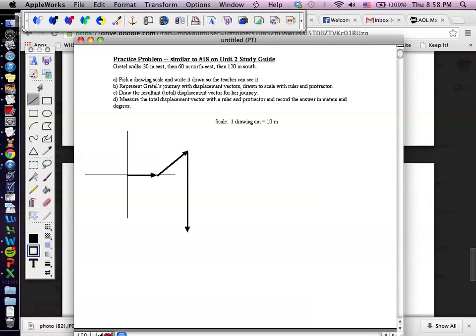Okay. We have done A. The drawing scale is right here. B. We just represented her journey with displacement vectors. You will use ruler and protractor. I didn't. Now we're on C.